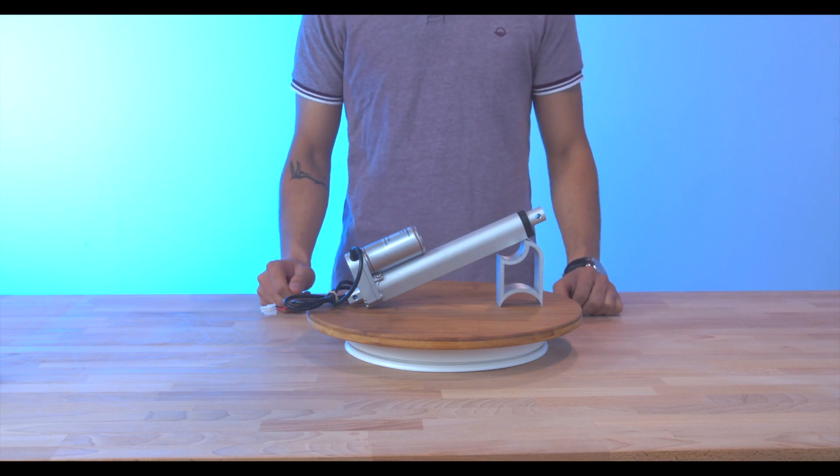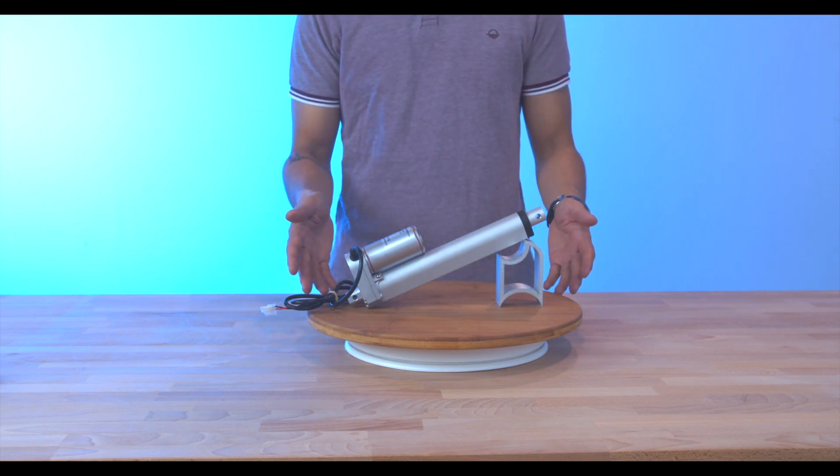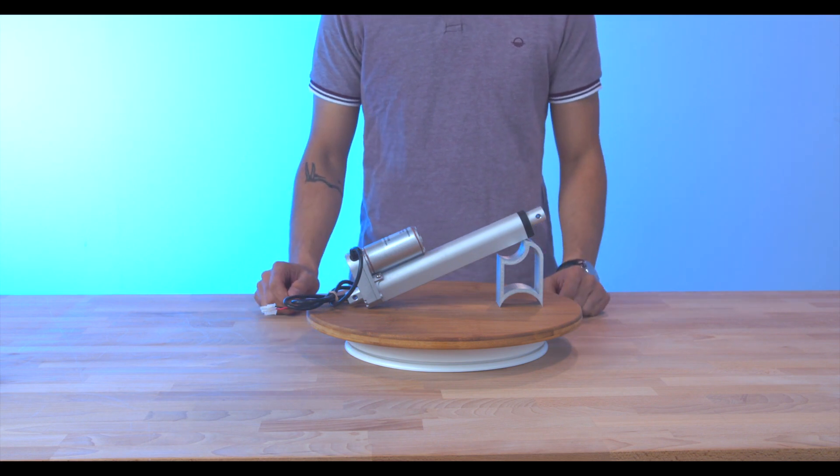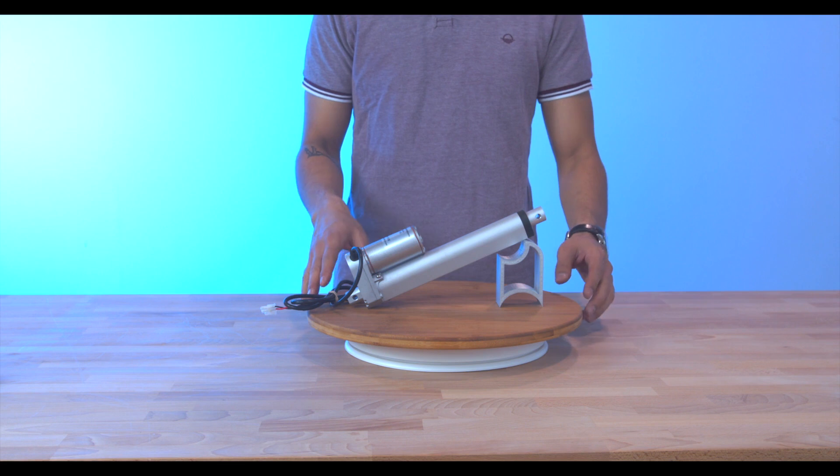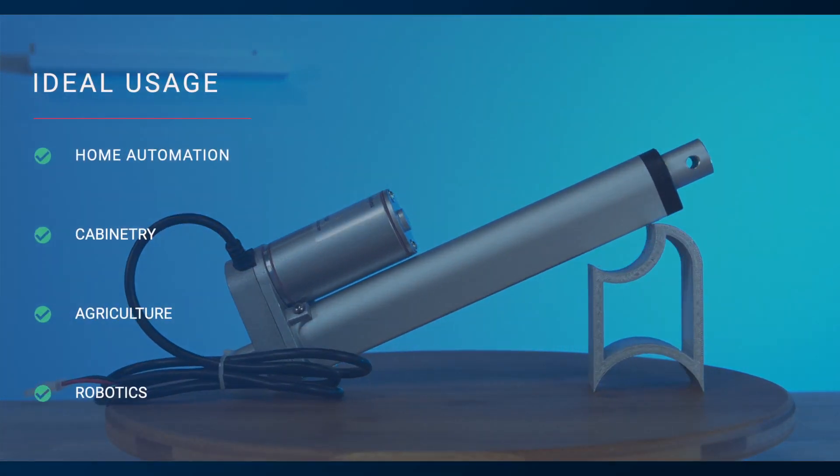Hi there, welcome to another Progressive Automations product overview video. Today we'll be going over the PA14 electric linear actuator, giving you an overview into its features and capabilities. This low current, medium force actuator is ideal for areas such as home automation, cabinetry, agriculture, robotics, and so on.